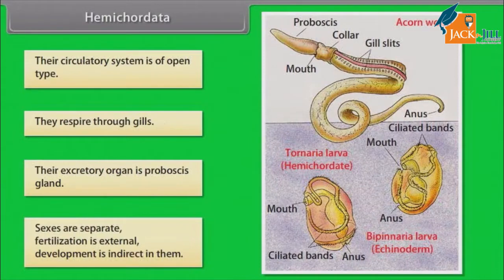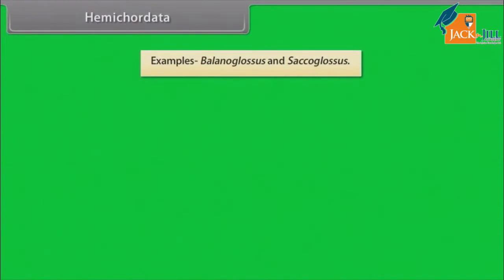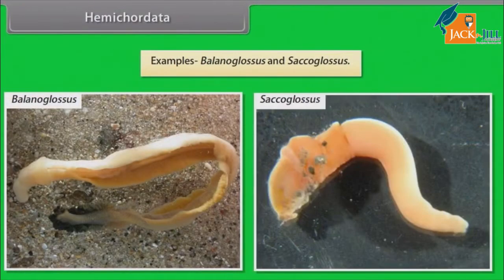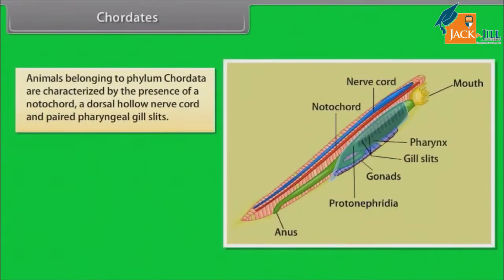Their excretory organ is the proboscis gland. Sexes are separate. Fertilization is external. Development is indirect in them. Example: Balanoglossus.